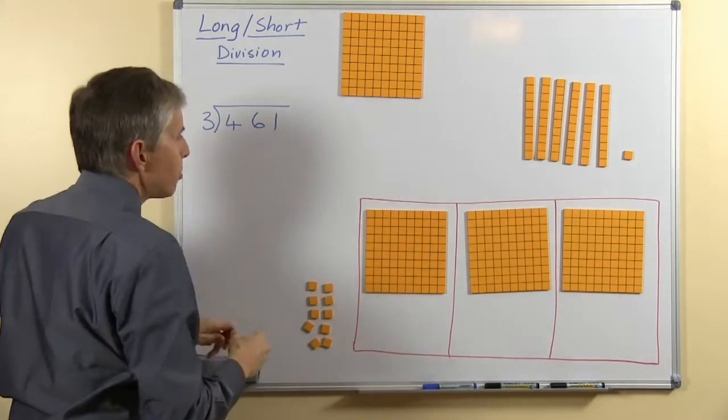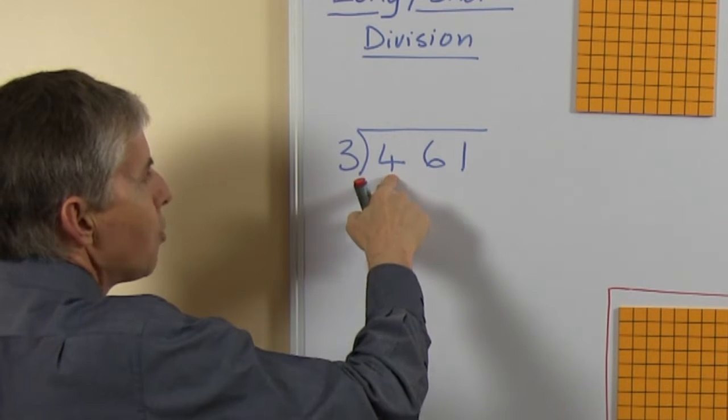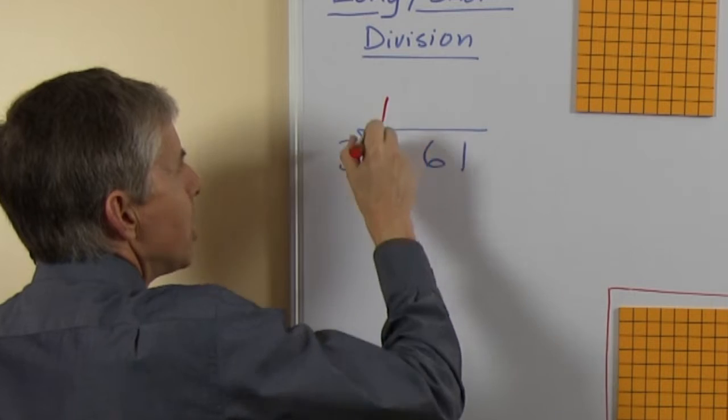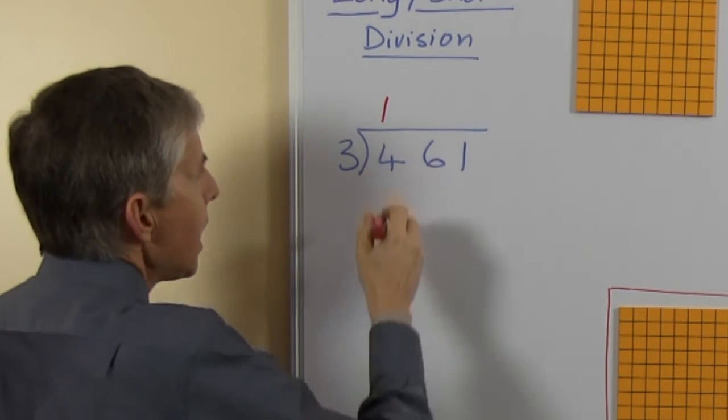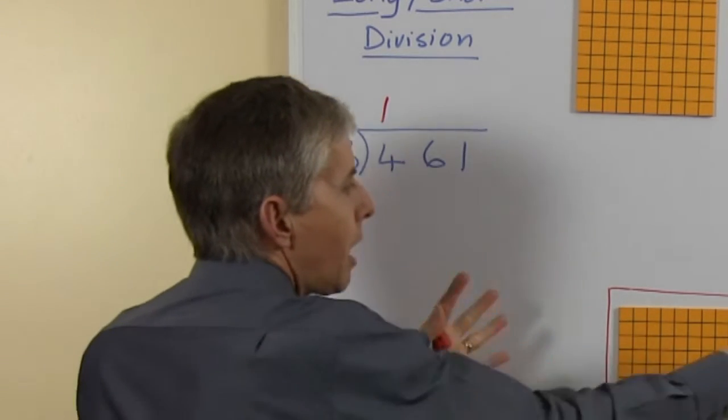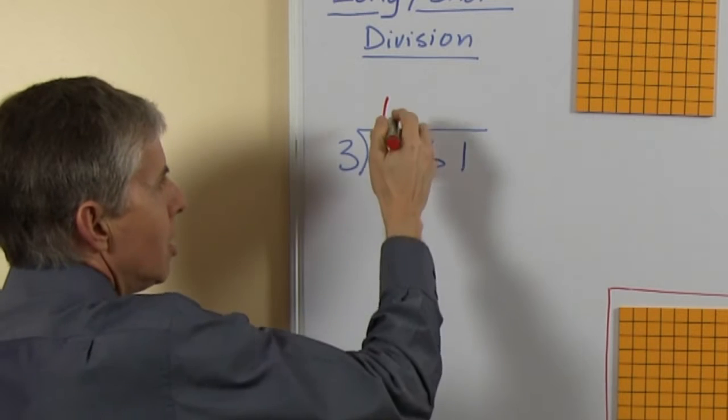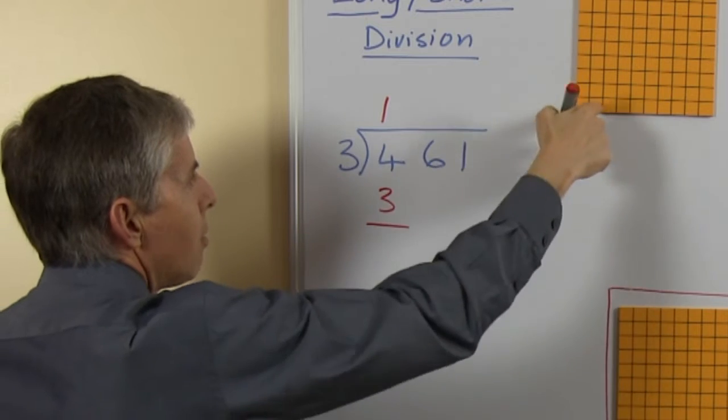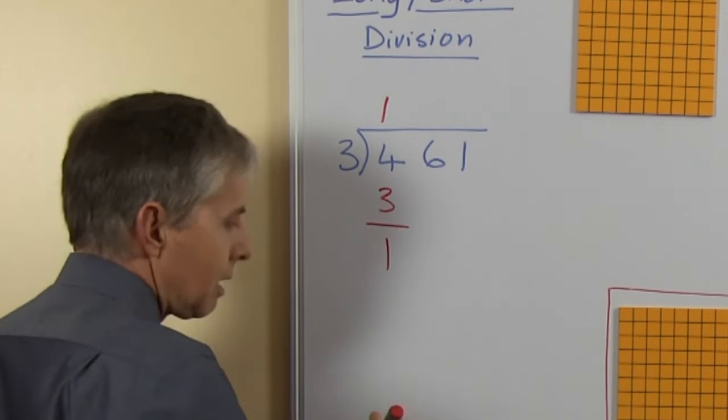So using the written process we do it this way, we say 4 divided by 3 is how many, how many can we share out? Well everybody can have 1, so we write that at the top and then we multiply to work out how many we have shared, 1 times 3 is 3, we'll put that under the 4 so we can take it away and look at how many are left, of course there's 1 left.